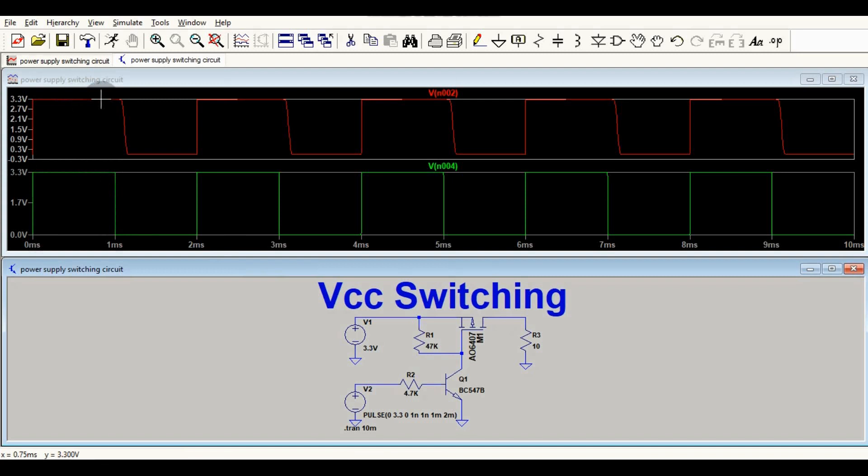is now connected. Your load R3 is now connected with the source V1. The voltage across R3 is 3.3 volts. Now, whenever the signal coming from the microcontroller is zero or low,